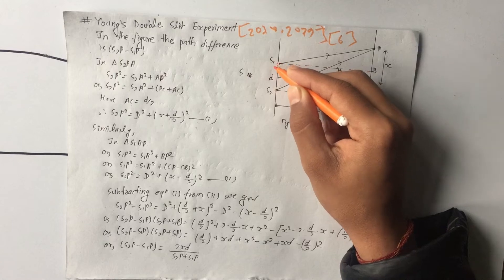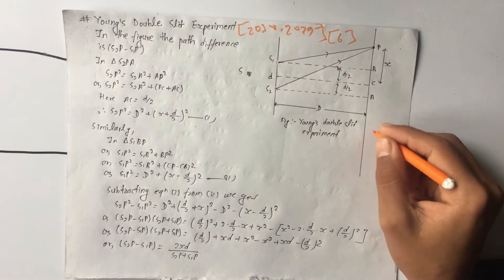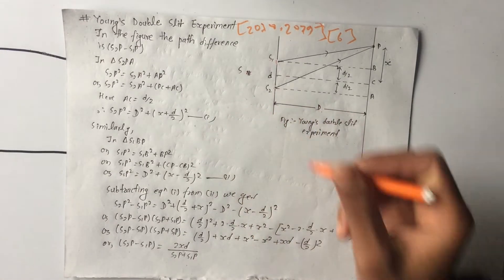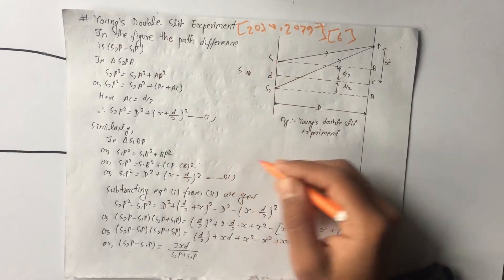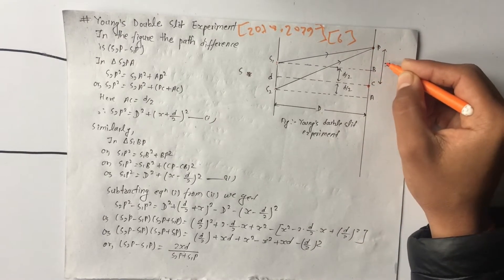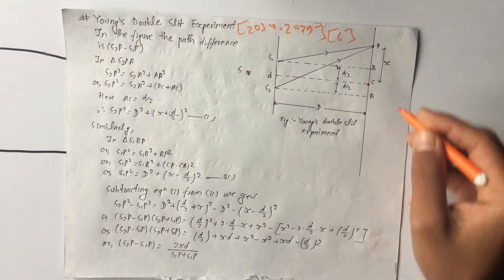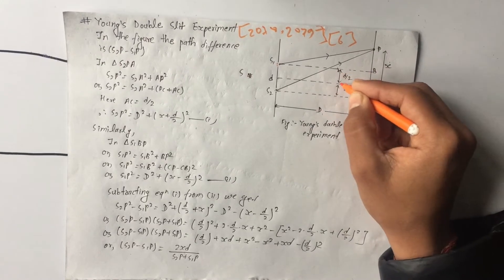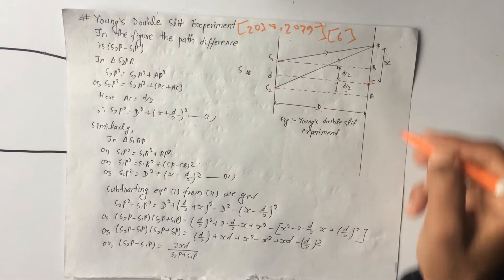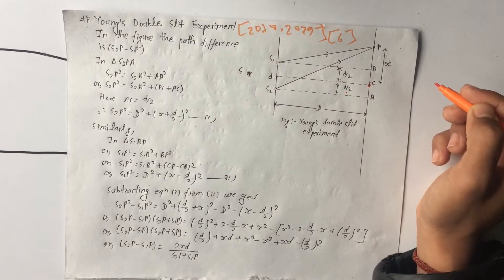This screen is placed at a distance, and the distance between the two slits is d. The center is marked as C, and we consider a point P on the screen at distance x from the center.